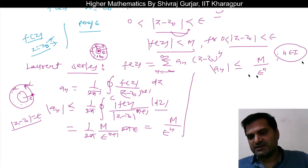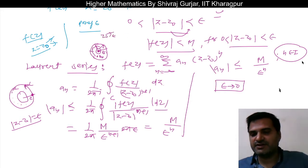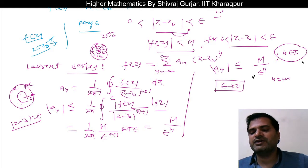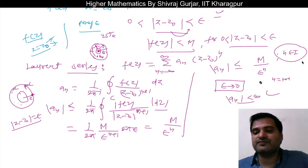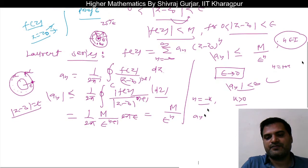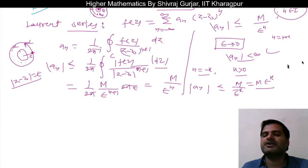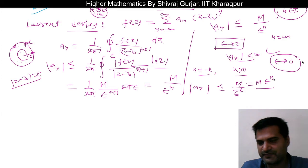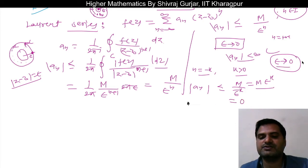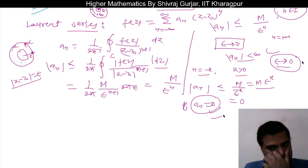Now epsilon is approaching zero because we are looking at the neighborhood of z-naught. If n is a positive integer, then |aₙ| stays bounded. But if n is negative — let n = -k where k is some positive integer — then |aₙ| ≤ M · epsilon^k, which goes to zero as epsilon tends to zero. So |aₙ| ≤ 0, meaning aₙ must be zero.